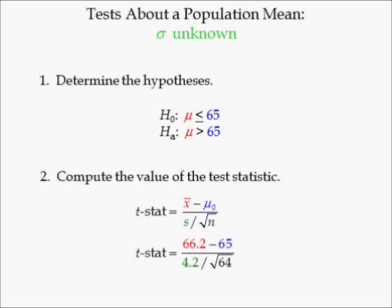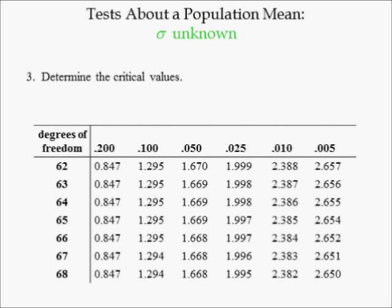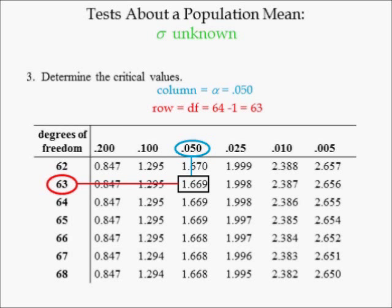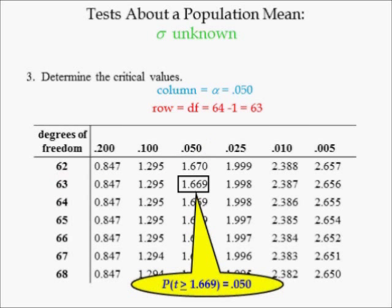In step two, the test statistic is computed. Since sample mean x-bar equals 66.2, the posted speed limit is 65 miles per hour, and the sample standard deviation is equal to 4.2, with a sample size of 64, T-stat equals 2.286. In step three, the critical value is determined. Since this is a one-tailed test with a significance level of 0.050, the critical value is in column 0.050 of the T distribution table, and in row 63 because the sample size was 64. Hence the T-critical value is 1.669.